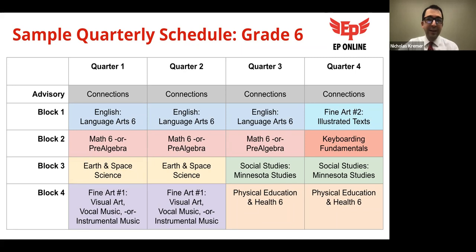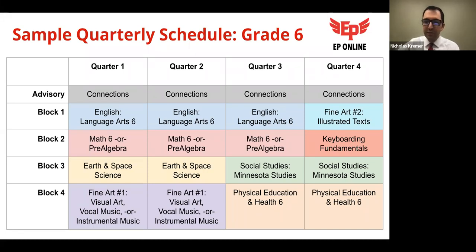Those three quarters of English and math provide extended time in literacy and numeracy because we know those skills are critical for postgraduate success. In the fourth quarter, the English course transitions into one of two fine art offerings, with the topic shifting year to year — focusing on media arts courses such as illustrated texts, theater studies, or film studies. We let students vote on topics they're interested in, and we build courses around their interests.